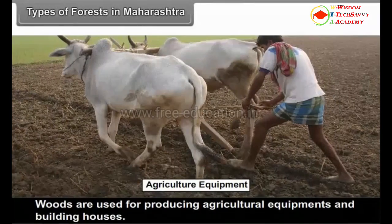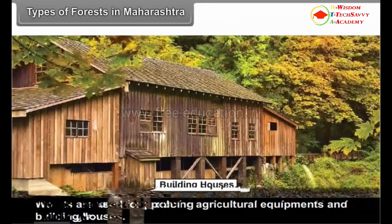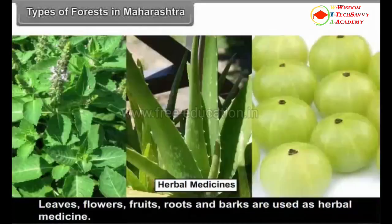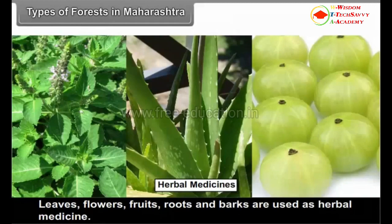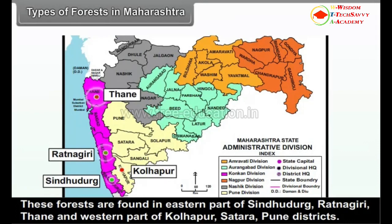Woods are used for producing agricultural equipment and building houses. Leaves, flowers, fruits, roots and barks are used as herbal medicine. These forests are found in the eastern part of Sindhudurg, Ratnagiri, Thane, and the western part of Kolhapur, Satara and Pune districts.